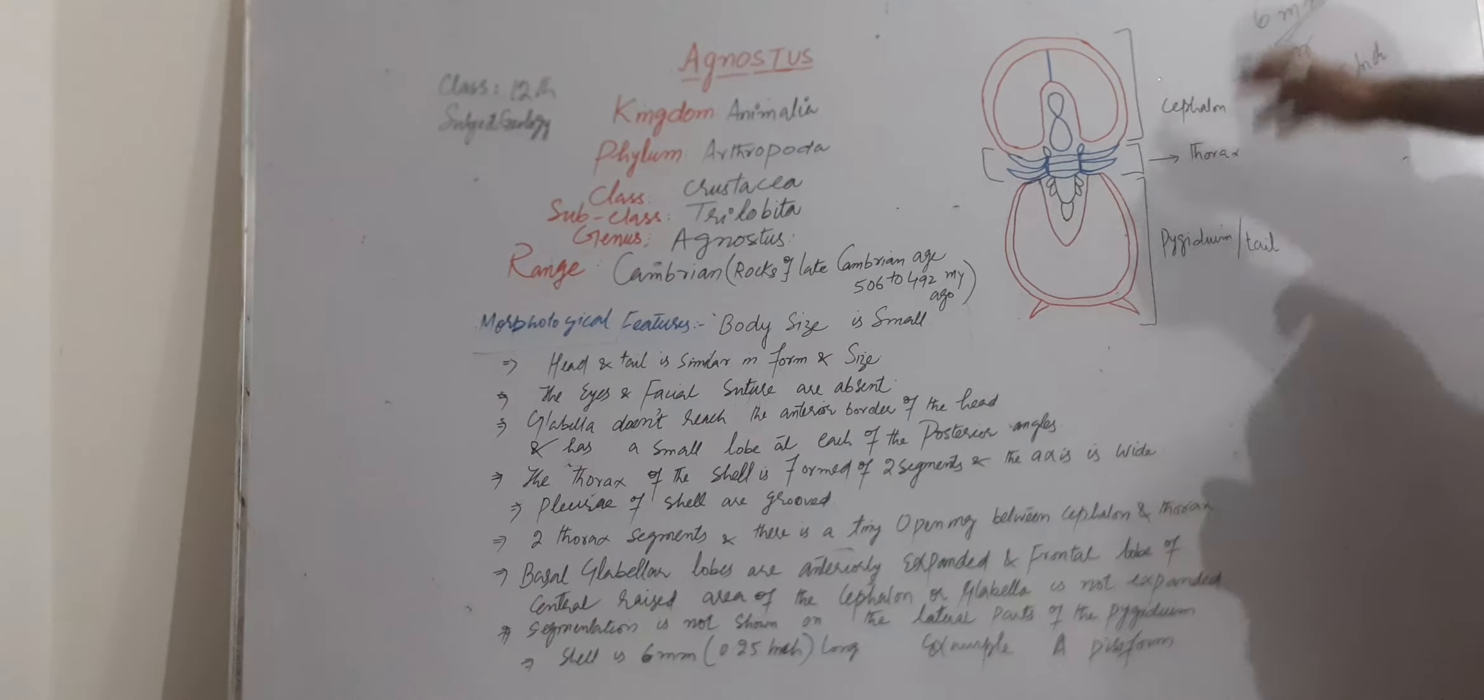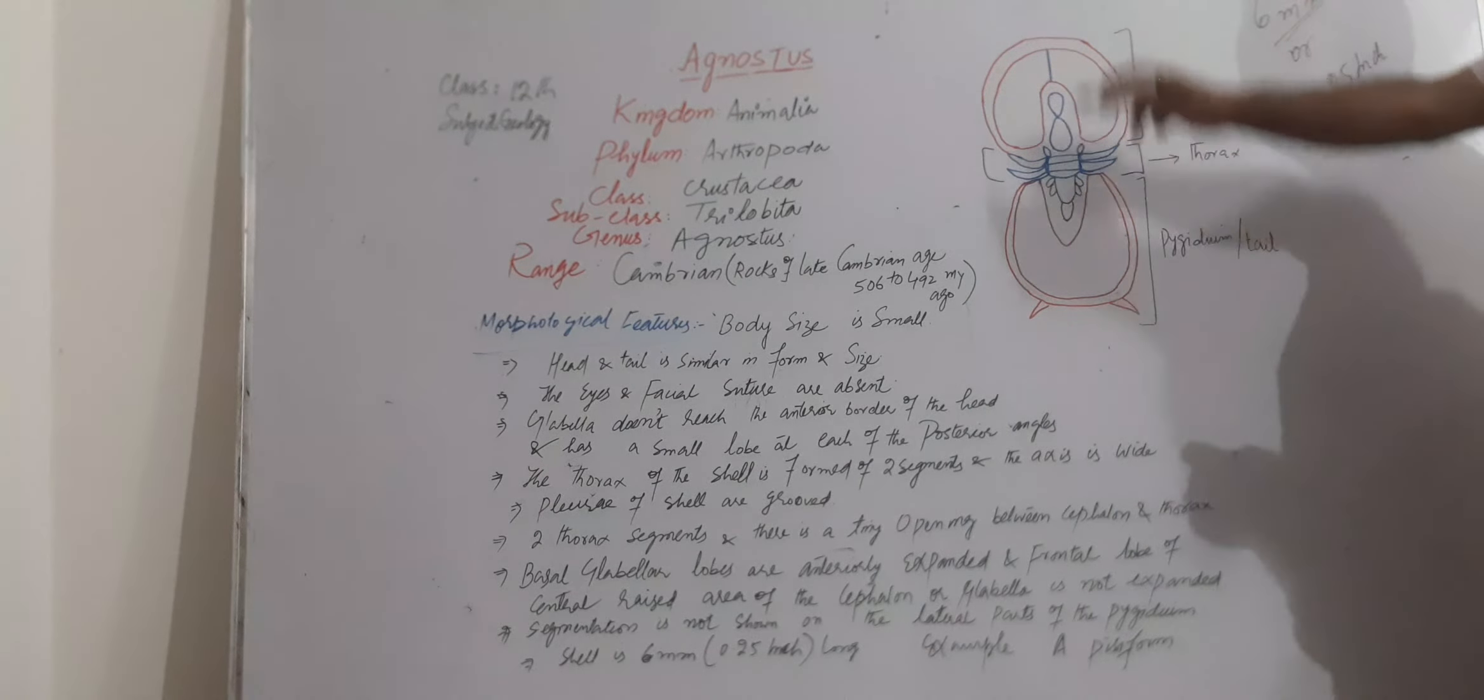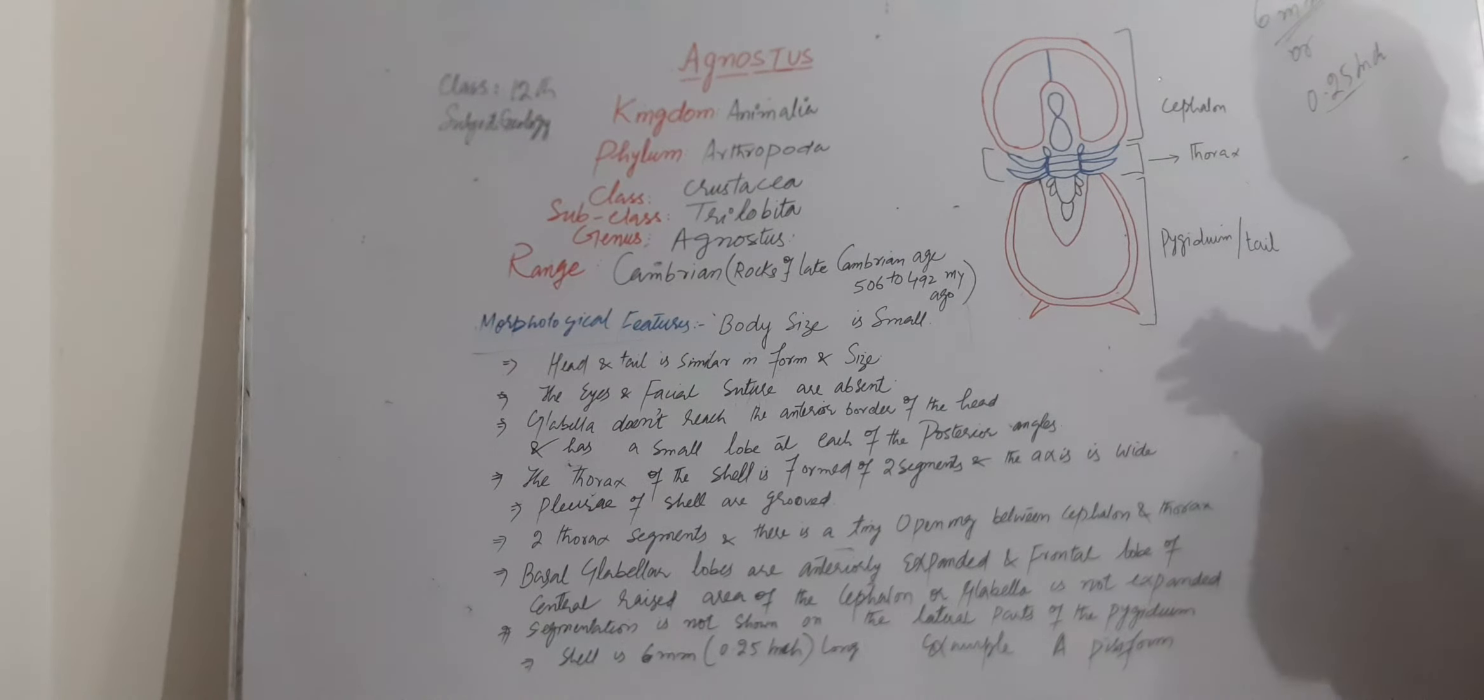The shell should be almost 6mm or 0.25 inches. This shell is quite small by Agnostis, and this is the example of Agnostis pisiformis.